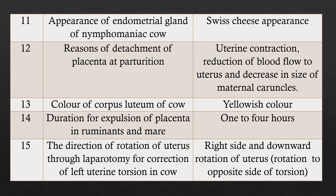Question 15: The direction of rotation of the uterus through laparotomy for correction of left uterine torsion in the cow. This is an important question for clinicians who encounter serious cases of torsion. When the uterus is rotated to the left, the clinician must rotate it to the right side and downward. The principle is to rotate in the opposite direction of the torsion to correct it — rotation in the opposite direction releases the torsion.